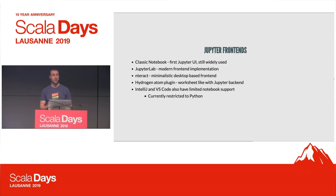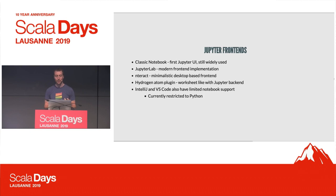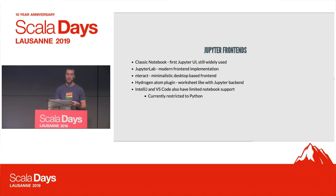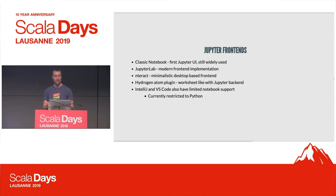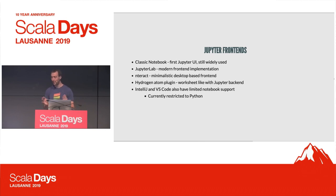There are a bunch of different frontends available. We have the classic notebook and JupyterLab as its designated successor. There's also Nteract from the Netflix folks, and a plugin for the Atom Editor called Hydrogen, which is a little bit more worksheet-like but with a Jupyter backend. And then the major IDEs also have some limited notebook support, but currently it's restricted to Python. But there are some ideas to improve the Scala story here.